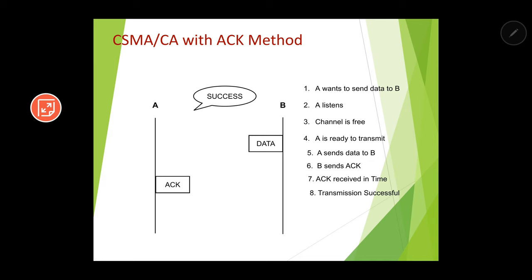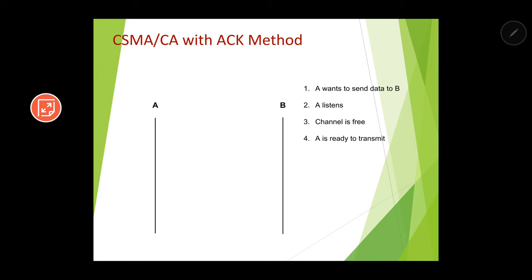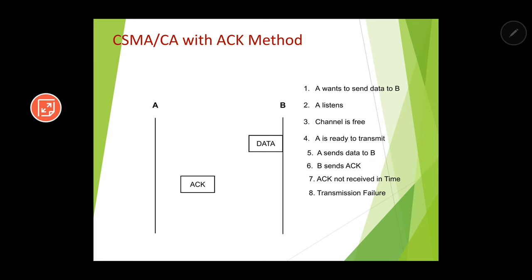Now let us go to the second scenario of CSMA/CA with ACK method. The first steps are the same — A wants to send data to B, A listens if the channel is free, and if free, A is ready to transmit and sends the data to B. Then B sends an acknowledgement to A as confirmation. But if the acknowledgement is not received by A within the time frame, then A will think that the transmission is not successful, and it will lead to a transmission failure.